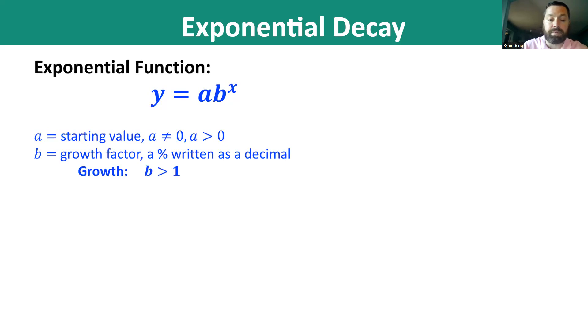With growth, what we did yesterday, the b value was bigger than 1. With decay, it's between 0 and 1. It cannot go below 0. It can't be negative, but it's between 0 and 1. So you're going to have a decimal between 0 and 1. The way you get it is you start with 100%, and you take away the rate. Subtract it this time instead of add it. x is still time.